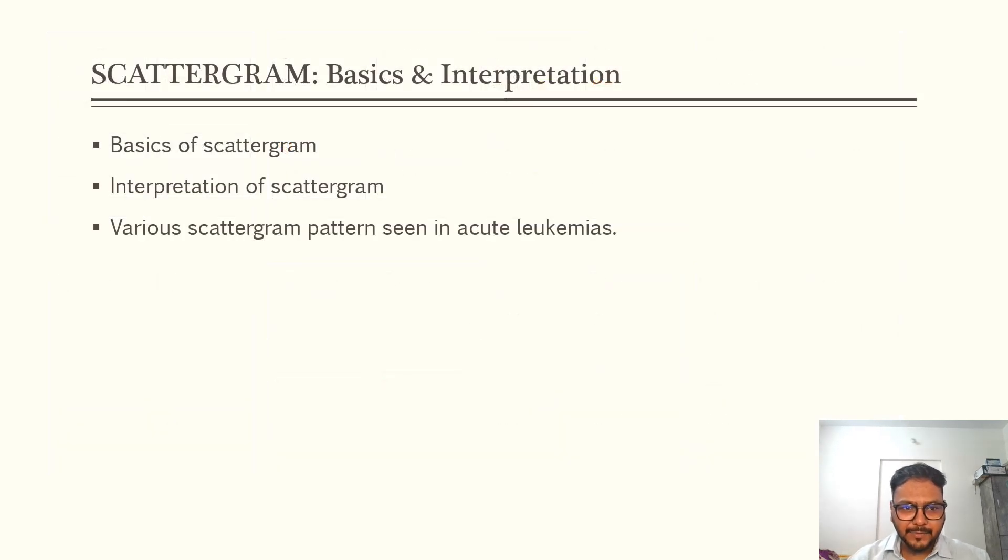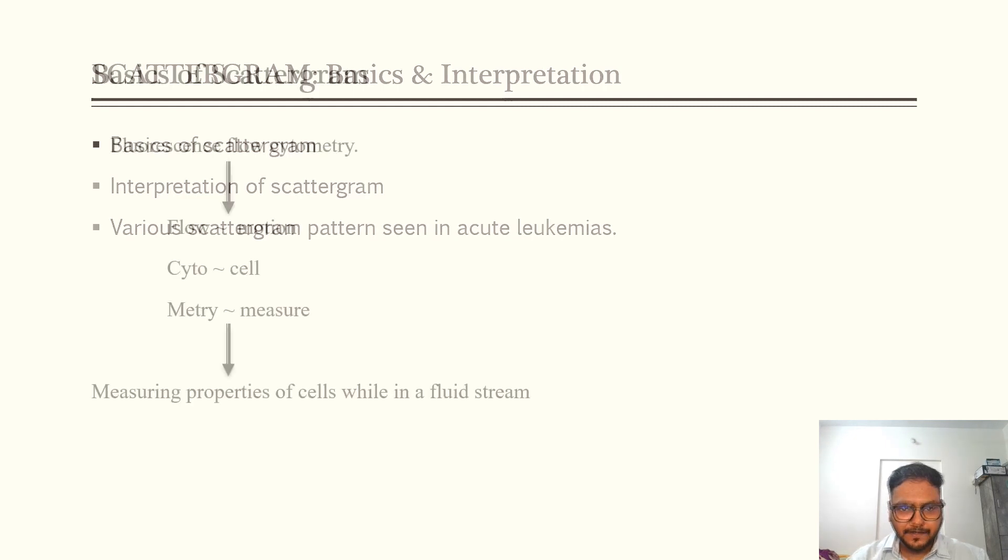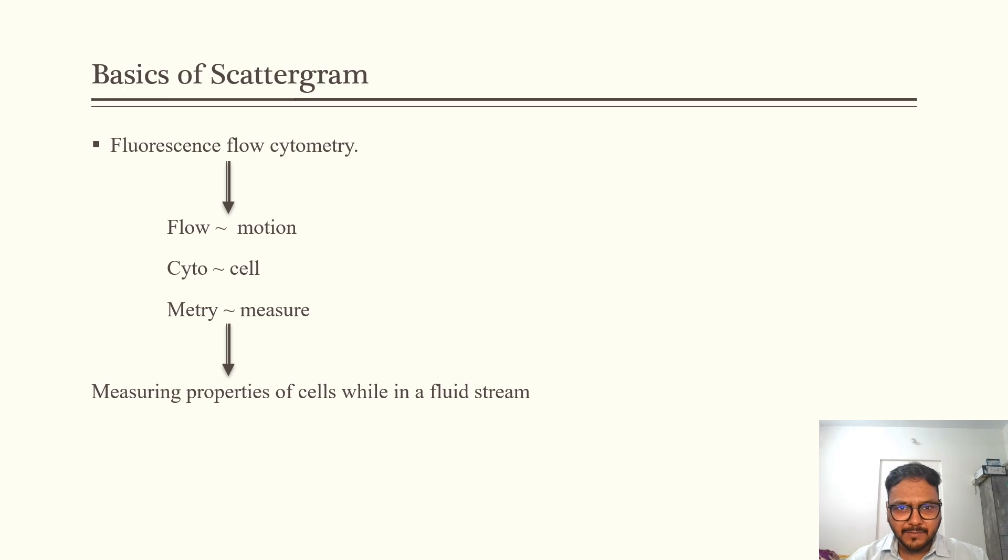I have summed up the entire scattergram into three parts. First is basics of it. Second is interpretation, which will be followed by various scattergram patterns which are seen in acute leukemias. So for understanding scattergram, we must have a basic knowledge of what is fluorescence flow cytometry.